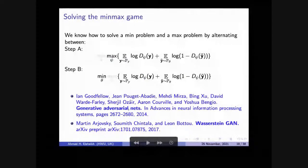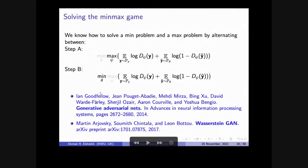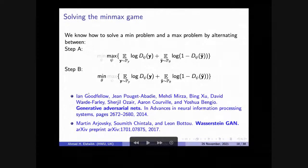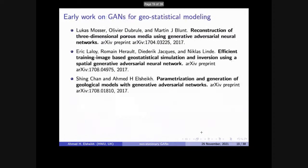For those interested in the original algorithm, the main reference is Ian Goodfellow's paper from 2014 with Yoshua Bengio — two very famous names in machine learning. You can find it on arXiv. The second paper we came across and utilized in some publications is the Wasserstein GAN, which has improved training properties. This brings us to early work on GANs for geostatistical modeling.